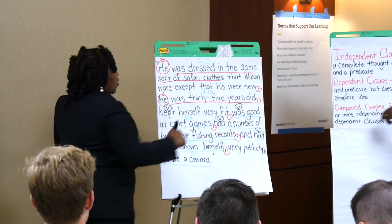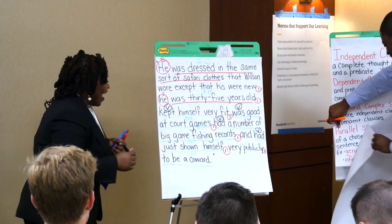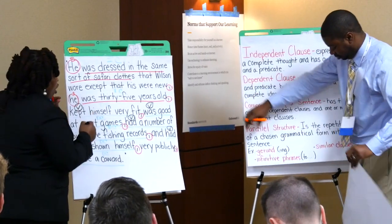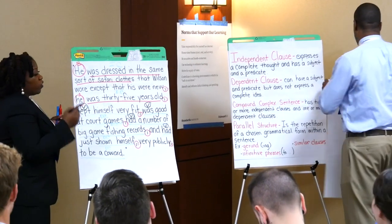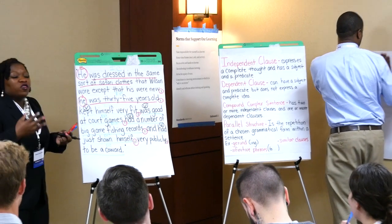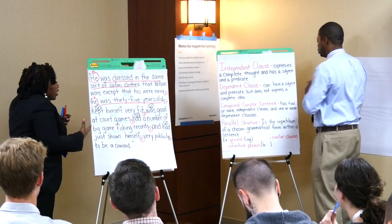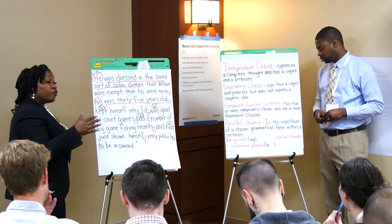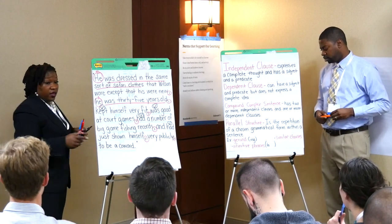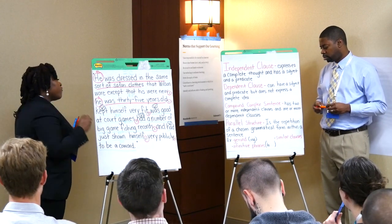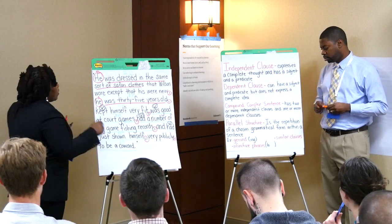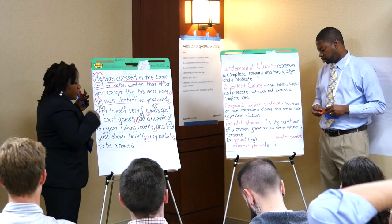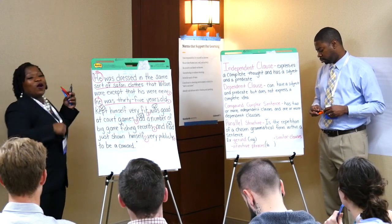Excellent. Can you reveal the final one? So the author intentionally started each dependent clause with a verb, and it creates a rhythmic sound when we're reading the sentence. Parallel structure is the repetition of a chosen grammatical form within a sentence. Sometimes they use the infinitive phrase too, and sometimes in this case they use similar dependent clauses which start with a verb.